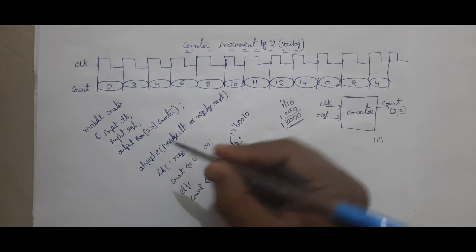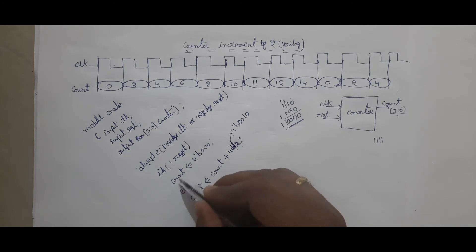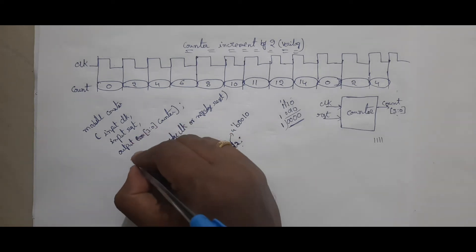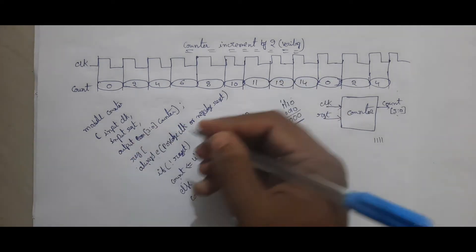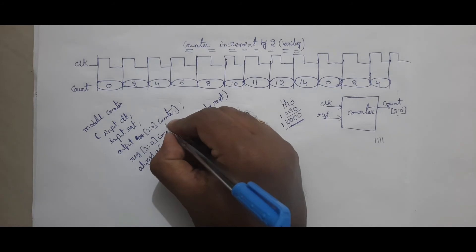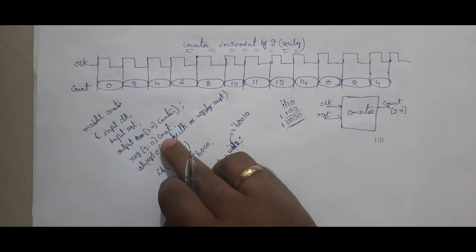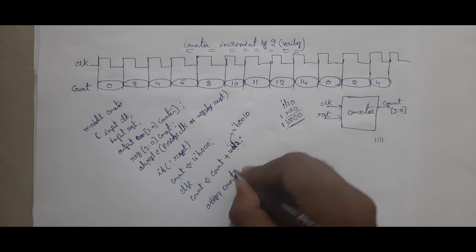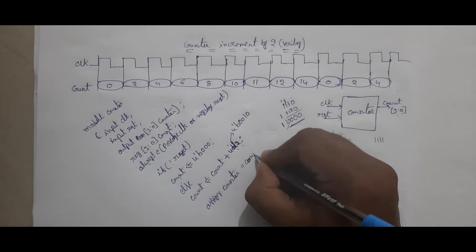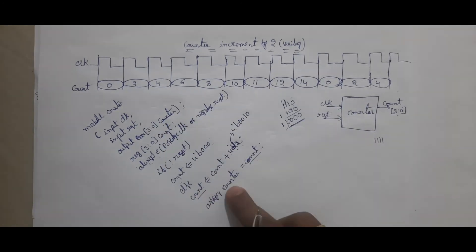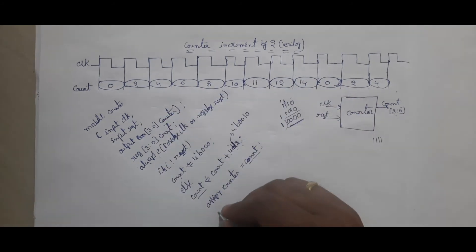In an always block, the left-side variable will be reg. That is why you have to declare reg here: reg [3:0] count. Then I declare count and counter — counter is the output, so I assign counter = count. This count is assigned to counter, so this counter value goes out. This is end module.